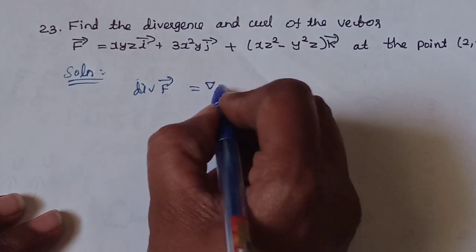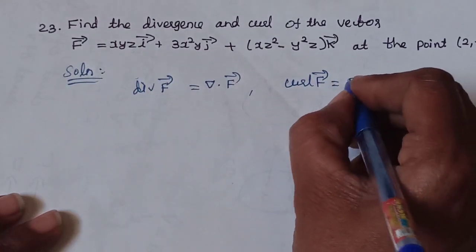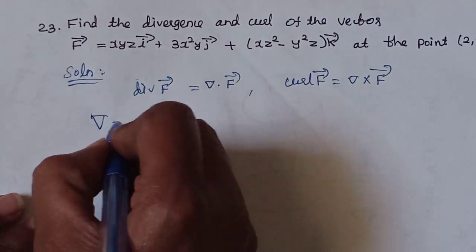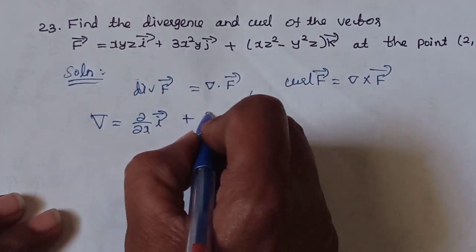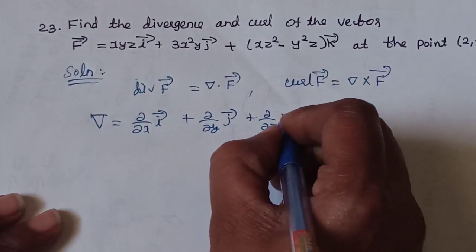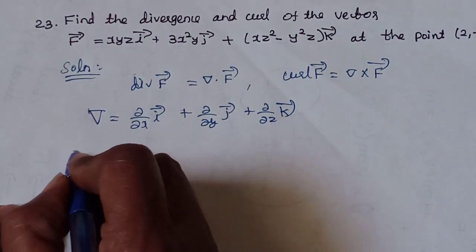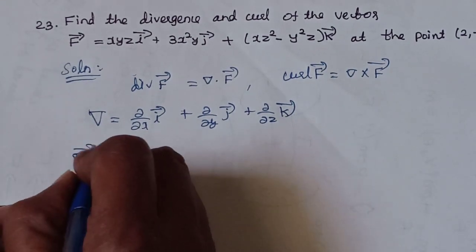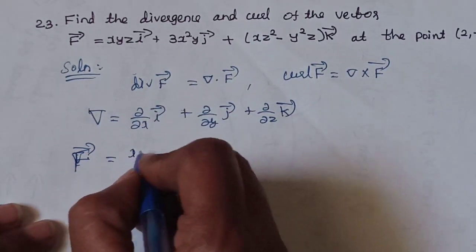Divergence of F vector is del dot F vector. The second is curl of F vector — curl F vector is del cross F vector. The del operator is a vector operator: del is equal to (d/dx) i-vector plus (d/dy) j-vector plus (d/dz) k-vector.